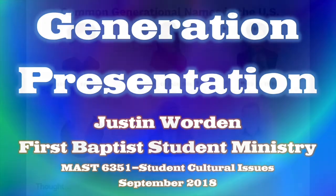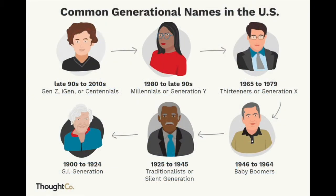As you probably know, there have been many generations that have populated our earth over the last several decades. Their names include the GI generation, those born between 1900 and 1925; the builders or silent generation, those born between 1925 and 1945; followed by the baby boomers, those born between 1945 and 1963; followed by the baby busters or Generation X, those born between 1963 and 1982.